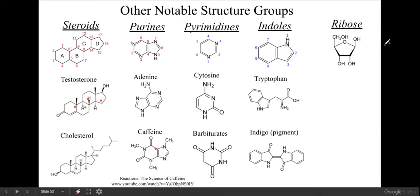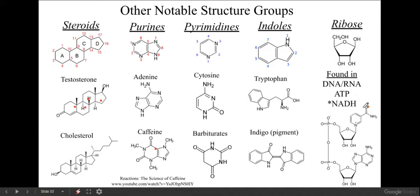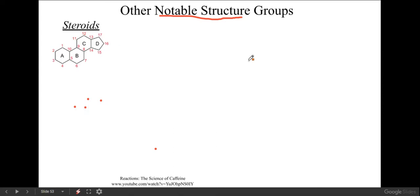Ribose - a five or six carbon sugar. DNA, ATP, NADH - which is found as part of the electron transport chain during the citric acid cycle - all contain this. There are plenty of other very common groups.